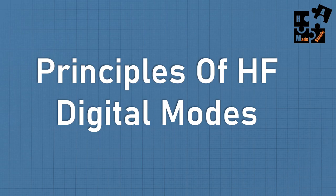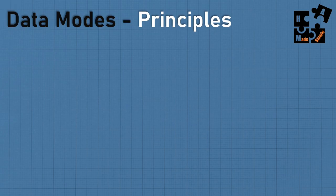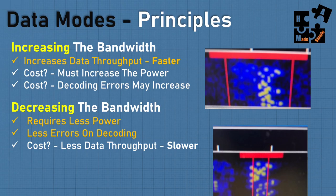In this section, we're discussing the principles of HF digital mode. The first principle I call the cause and effect of bandwidth. When you increase the bandwidth, you increase data throughput — it's faster. But there is a cost: it requires an increase in power and decoding errors may also increase. Conversely, when you decrease the bandwidth, it requires less power, fewer errors — but it's slower because less data throughput is occurring. Again, there's always a trade-off: if you do one, you have to give up something.